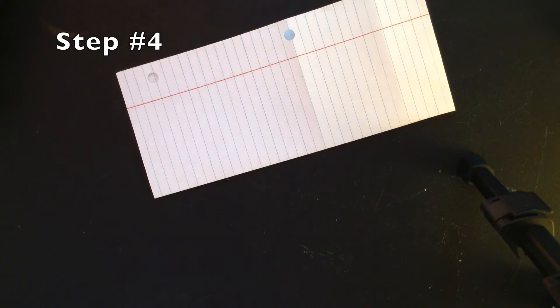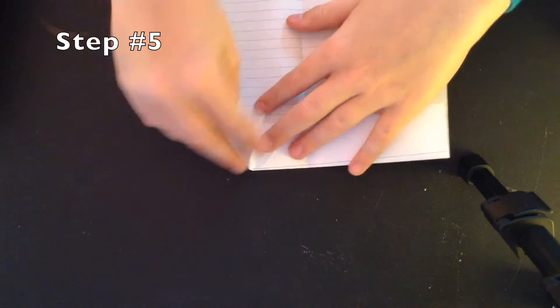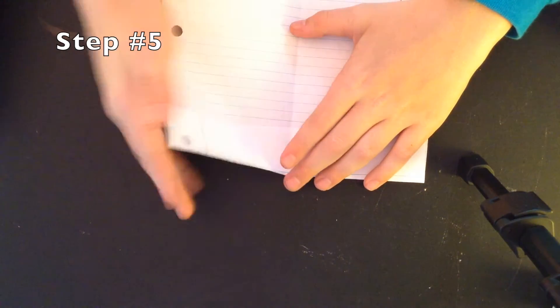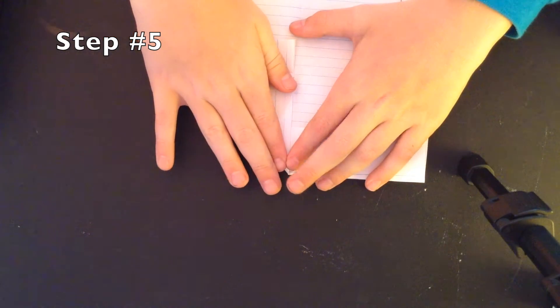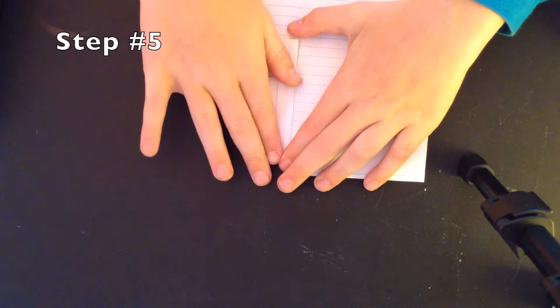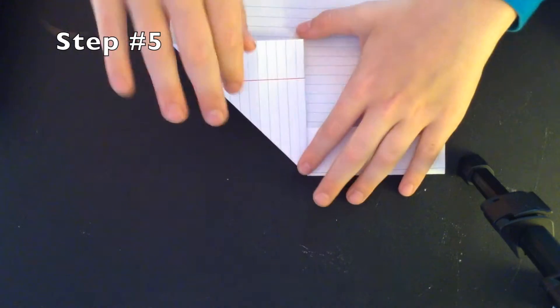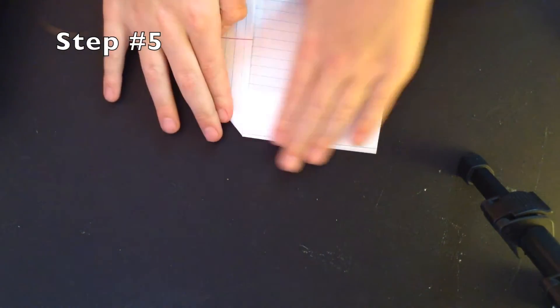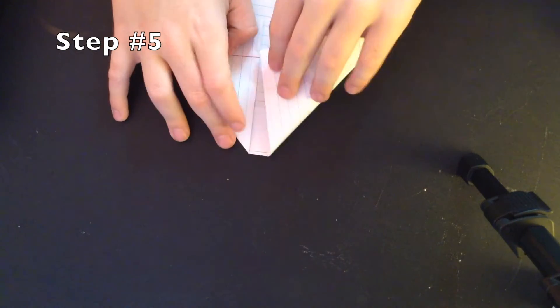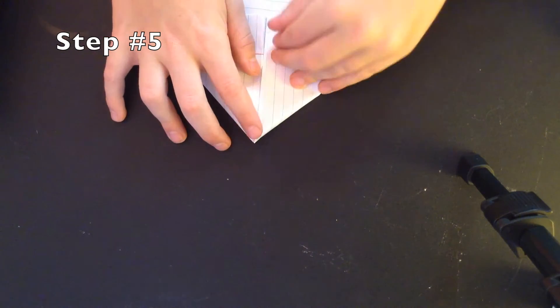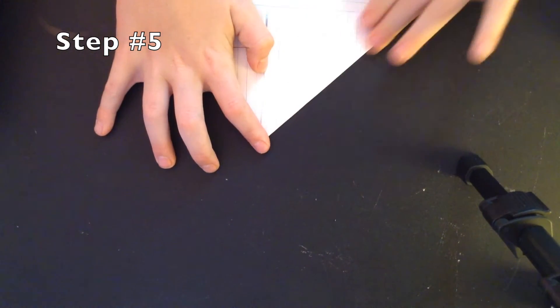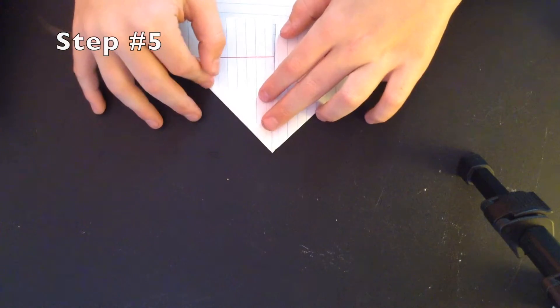Okay, so what you want to do for step number five is unfold it. Now fold this edge right here to right there, like that. Nothing really, it's not really that hard, so if you had trouble that would just be weird. And then once you are done with that, we go on to step number six.